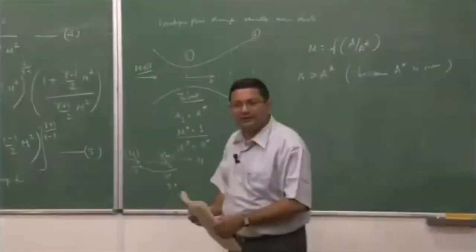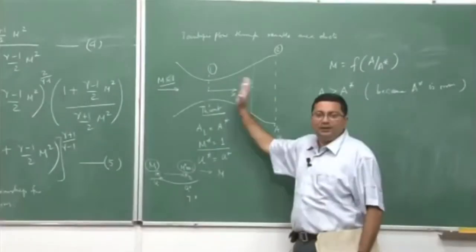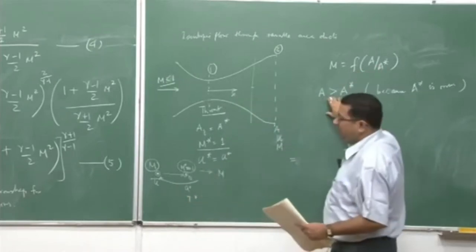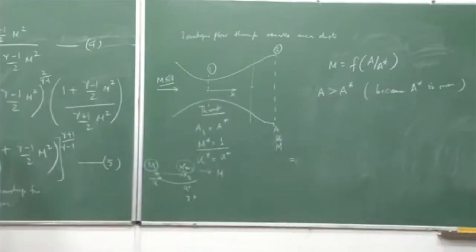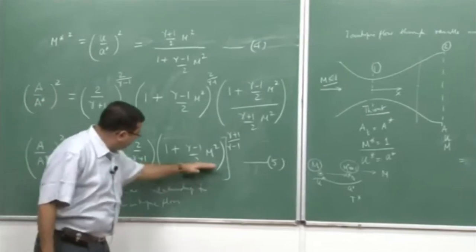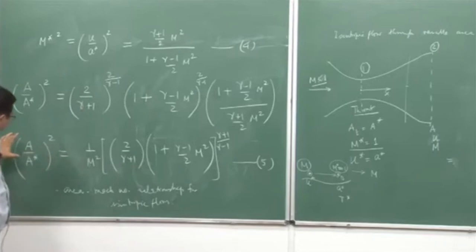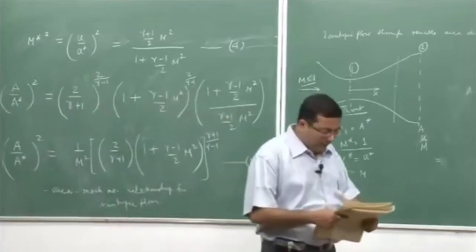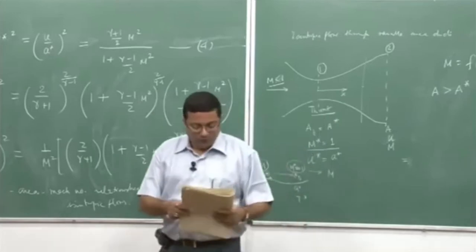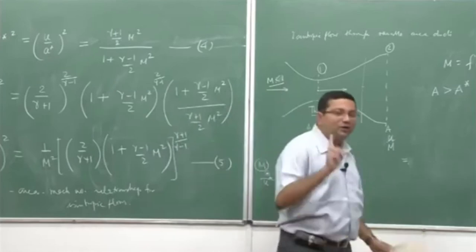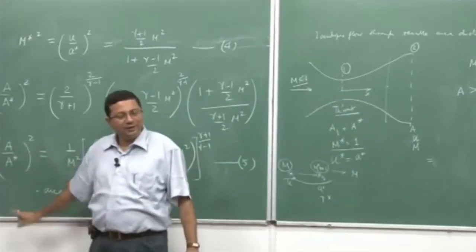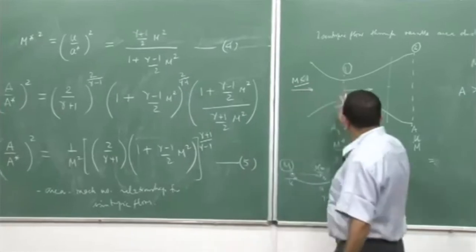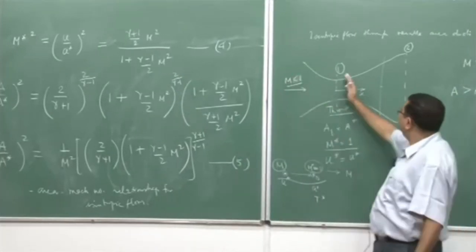For a given value of A/A* greater than 1, there are two solutions for M because it is effectively a quadratic relationship. There are two values of Mach number corresponding to a given value of A/A*. One of them will correspond to the subsonic solution and the other to the supersonic solution — one corresponds to the converging side of the nozzle and the other to the diverging side.